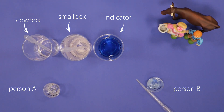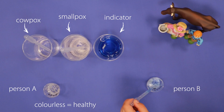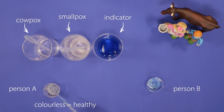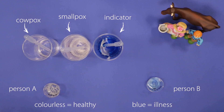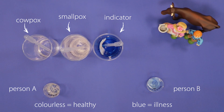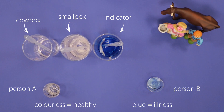Person A, the one who received the vaccine, will remain colourless and is therefore healthy. However, person B will turn blue indicating illness and is dying. So by adding a small amount of the disease-causing microbes — the cowpox pus — which causes a mild reaction in healthy people, it made these people less likely to suffer the consequences of smallpox and they would survive.